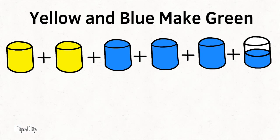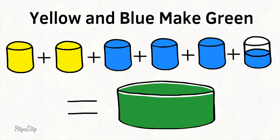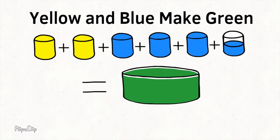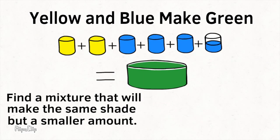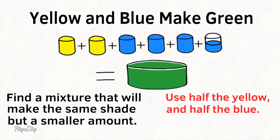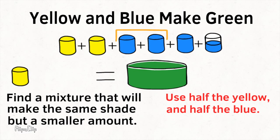Yellow and blue make green. In this case, mixing 2 cups of yellow paint and 3.5 cups of blue paint makes this shade of green. Find a mixture that will make the same shade of green, but a smaller amount. We could mix half the amount of yellow paint and half the amount of blue paint. That would give us the same shade of green but a smaller amount. Half of two cups of yellow would be one cup of yellow.